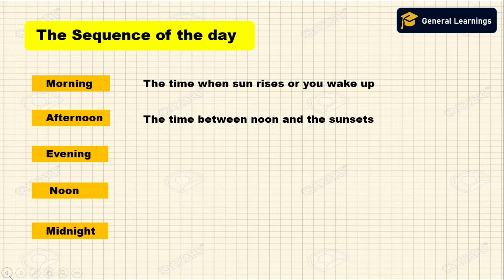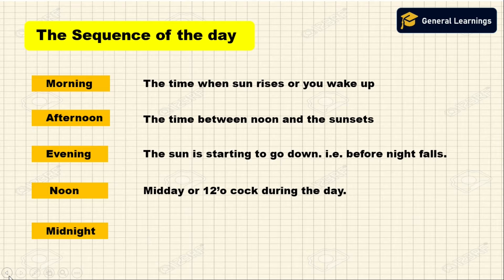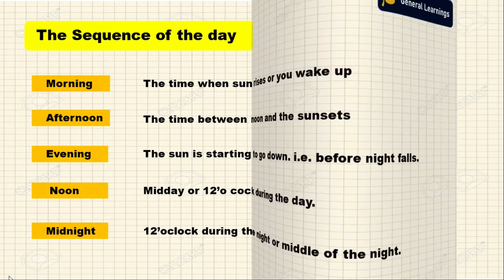Afternoon is the time between noon and sunset, from around 12 p.m. until approximately 6 p.m. Evening is when the sun is starting to go down, before nightfall — between 6 p.m. and 9 p.m. Noon is 12 o'clock during the day. Midnight is 12 o'clock during the night — the transition from one day to the next.